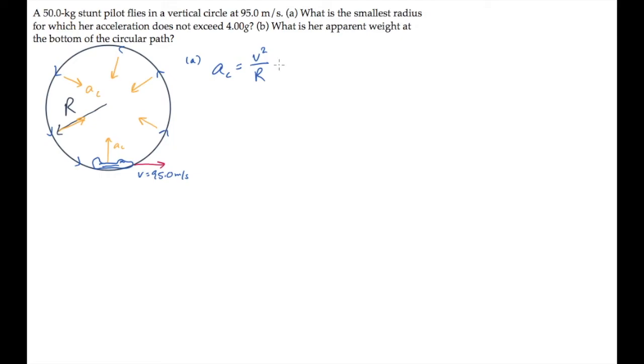So the maximum acceleration, 4 g, corresponds to the minimum radius. We'll call it r min. Now we can solve for r min. It equals v squared over 4 g. Substitute the values.